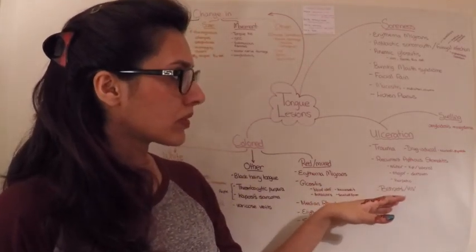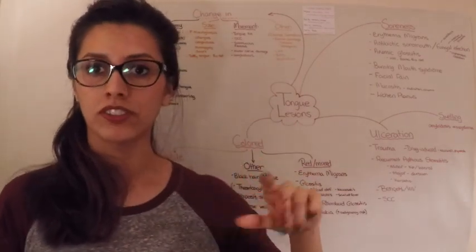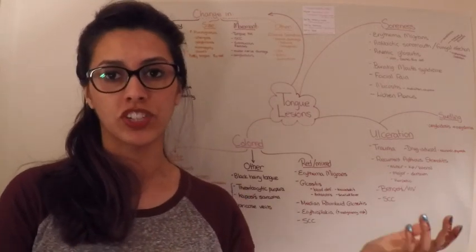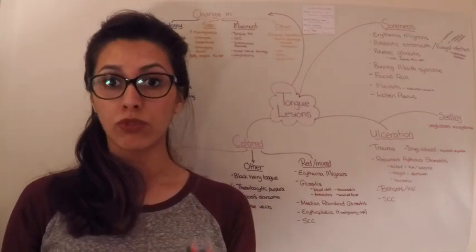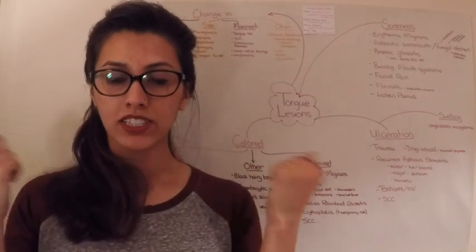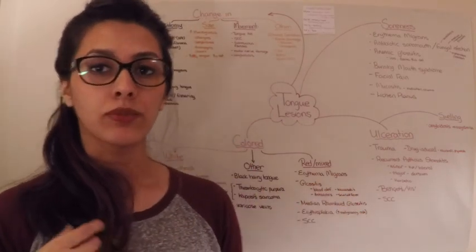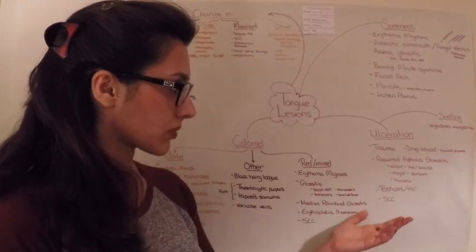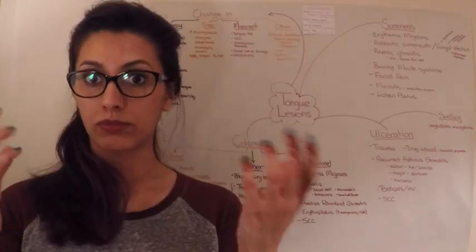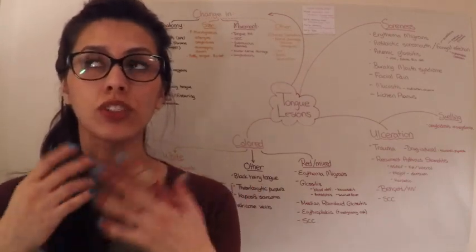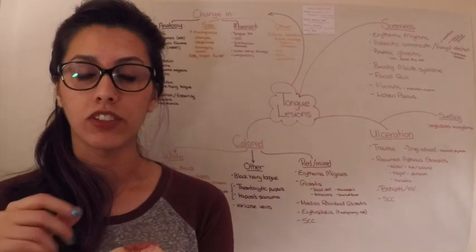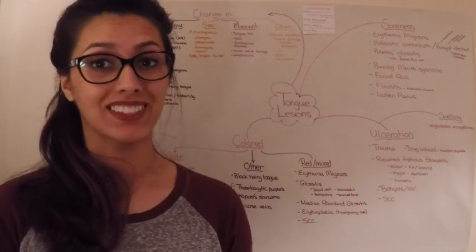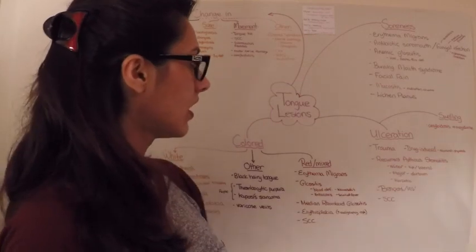Behcet's and HIV—remember when we talked about ulcers, if you find ulcers and you can't find a reason, it's always important to rule out Behcet's and HIV. Behcet's, you want to check for eyes, genitals, skin, and joints. With HIV, you look at the history and then do tests. Squamous cell carcinoma—you get persistent ulcer with induration, and it's firm. They usually occur on the lateral border of the tongue and far back, so it's really hard to see, which is why it can be missed very easily.